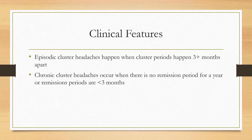Cluster headaches can be further divided into episodic and chronic subtypes. Episodic cluster headaches occur when cluster periods happen three or more months apart, meaning there is a remission period of three or more months. Chronic cluster headaches occur if there is no remission period for a year, or if the remission periods are short — less than three months apart.